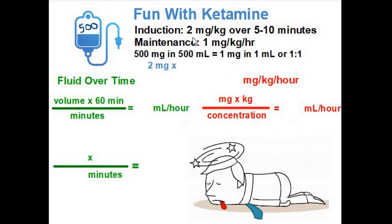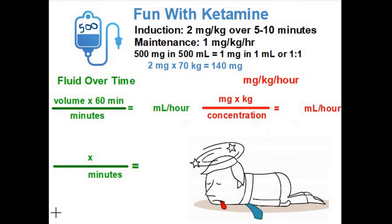Our induction dose is 2 milligrams per kilogram. We'll say this patient weighs 70 kilograms, so 2 times 70 is 140 milligrams. And since 140 milligrams in a one-to-one concentration is also 140 milliliters, we now know our volume. Go ahead and press pause here to do the calculation yourself, then press play and we'll do it together.